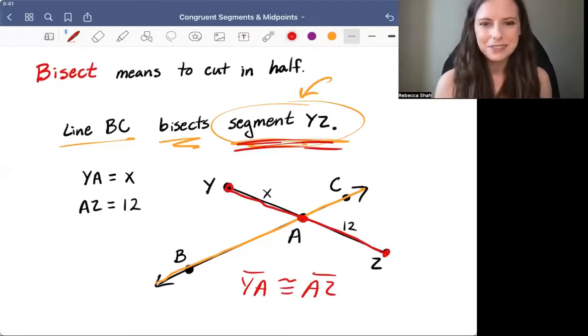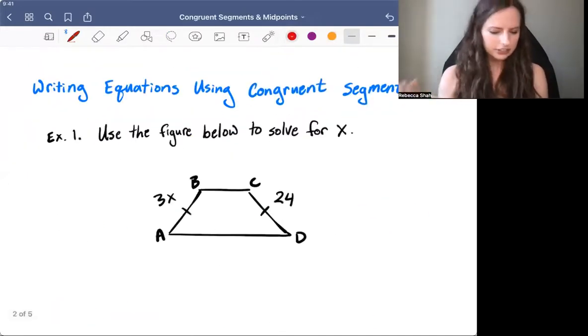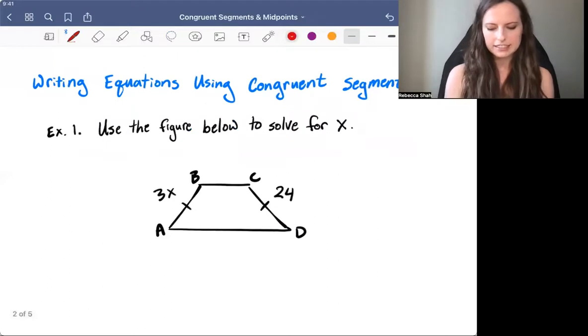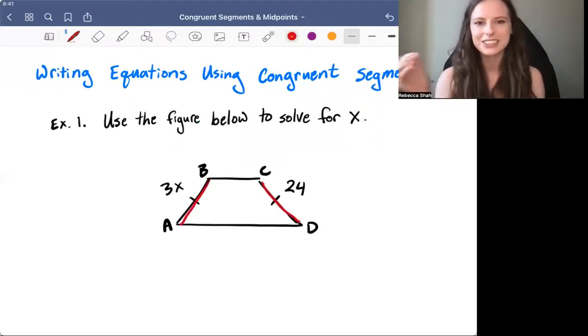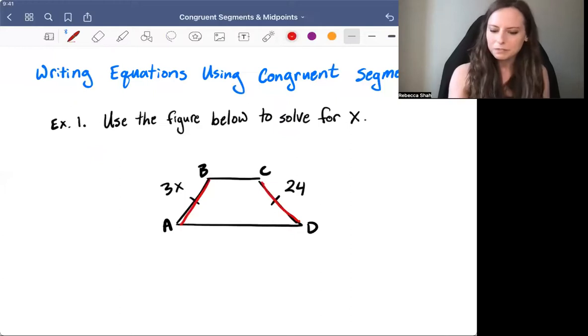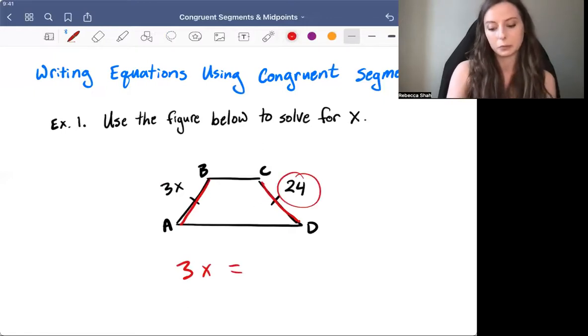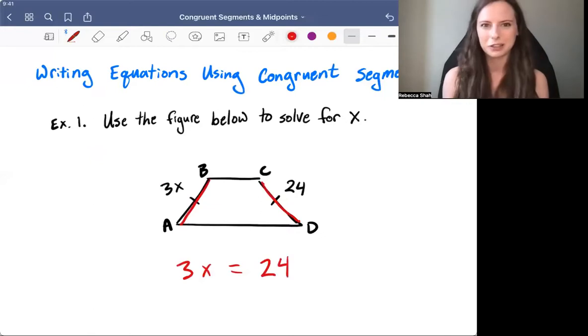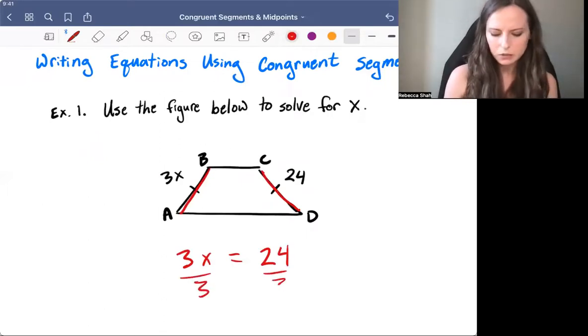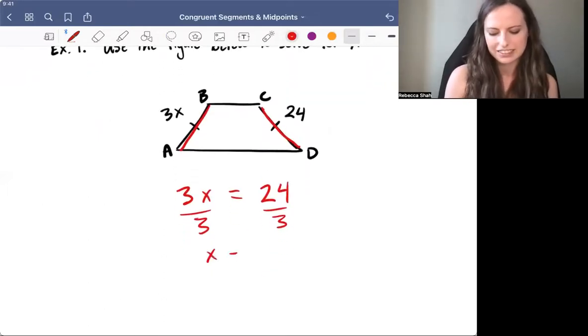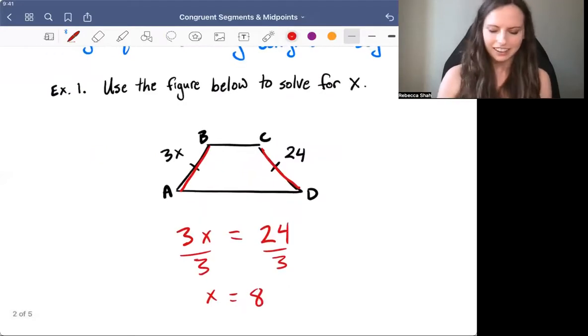All right, so let's see some examples. First off in this diagram, we can see that these two segments are marked as congruent, which means they're equal. So whatever you see for one of the segments, you would just set that equal to whatever you see for the other one. In this case, 3X equals 24. That's it. Just set up the equation and then solve for X. In this case, we'll divide both sides by 3, which means that X equals 8.